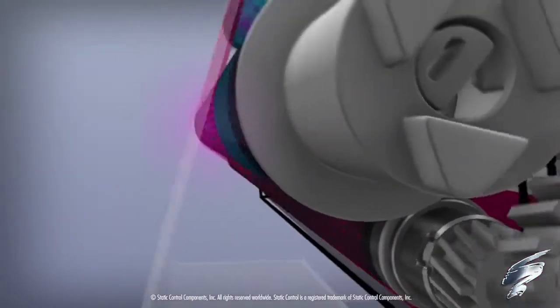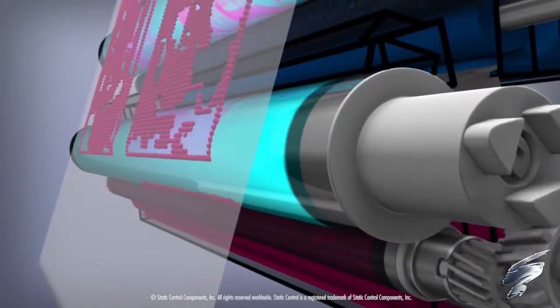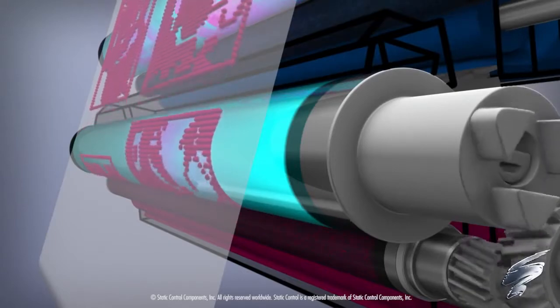The toner on the OPC drum is then transferred to the paper. This process occurs within the four color cartridges in every laser printer.